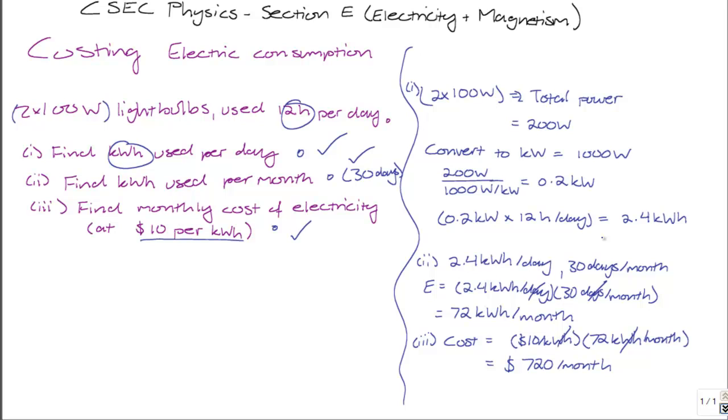So a quick recap. 2.4 kilowatt hours are used every day, which translates to 72 kilowatt hours of usage per month, and gives us a cost of $720 per month of usage. So if there's anything that is unclear, feel free to watch the video again, or leave us a comment. We hope you enjoyed the video, and that you'll stay tuned for the next video.